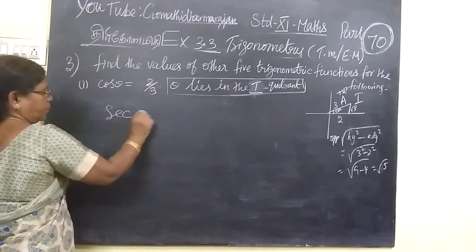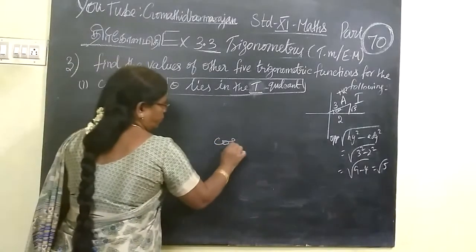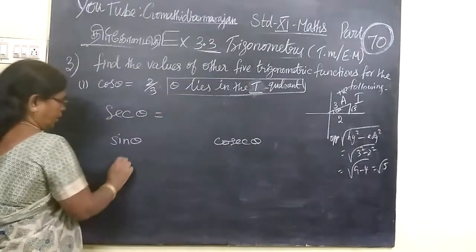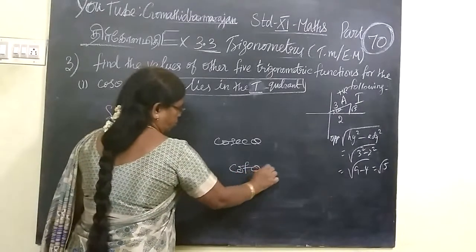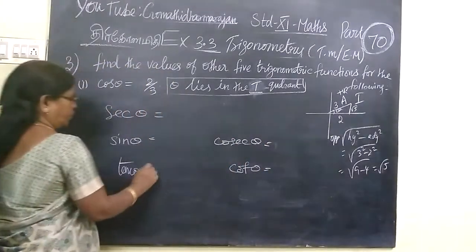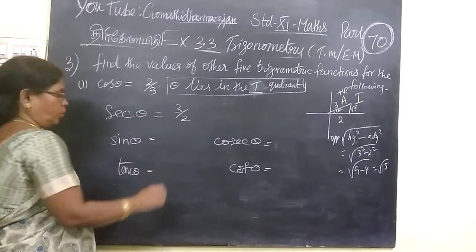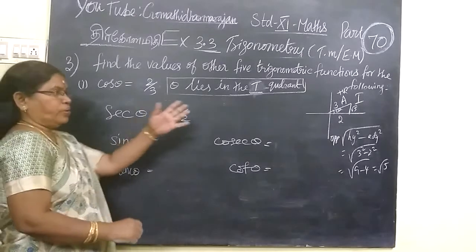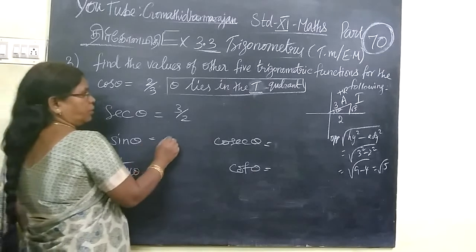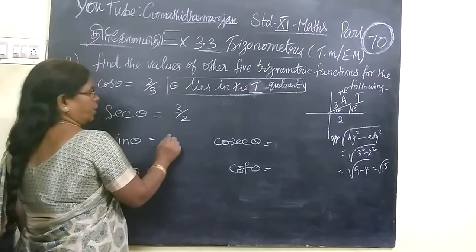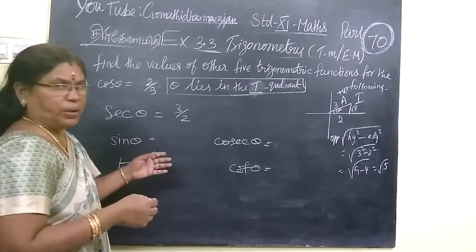So we want to find other values. Sin theta, then tan theta, then cot theta. Sec is reciprocal, 3 by 2, all positive. What is positive? What is positive? No need to worry about the signs. You write everything in positive way. So sin is opposite by hypotenuse.